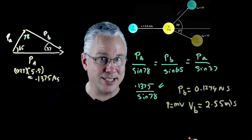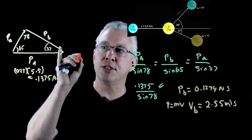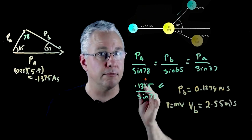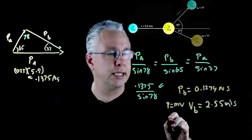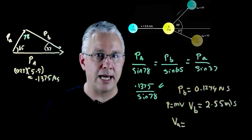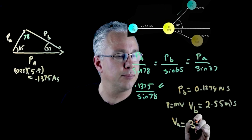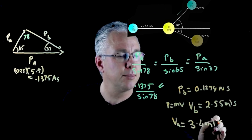Now it doesn't take a rocket scientist then you can do exactly the same procedure for working out the momentum of A and therefore the velocity of A after the collision. So the velocity of A after the collision ends up being 3.4 meters per second.